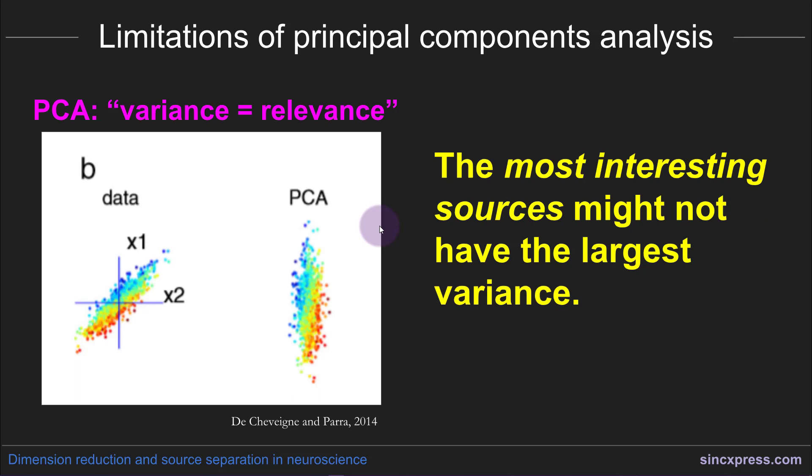A second major limitation of PCA has to do with what PCA considers to be important in the brain. Basically, PCA is just equating variance with relevance. From the perspective of PCA, something is important—a feature in the data is important—if it has more covariance across different variables. So if you have a dataset that looks like this, PCA will return as the first vector, or the rotated dataset, will look like this.